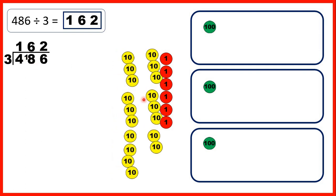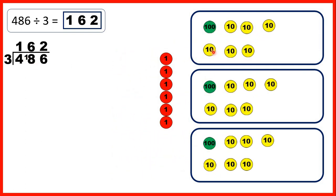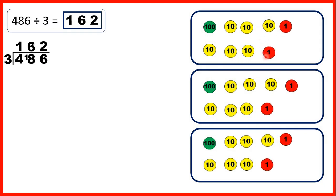We can share out all of those tens and we have 6 tens in each group, so that's why we have 6 as the tens digit of our answer. Then we share out our 6 ones and we get 2 ones in each group to give us our answer 162.